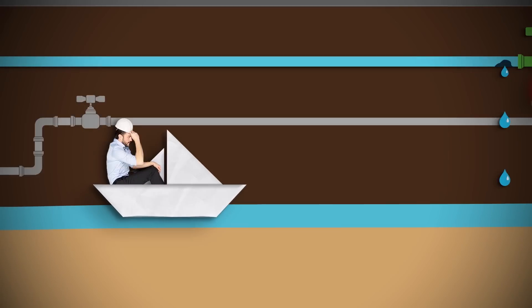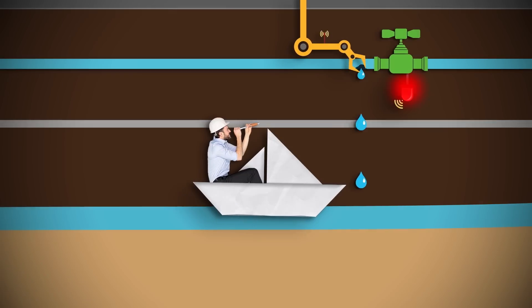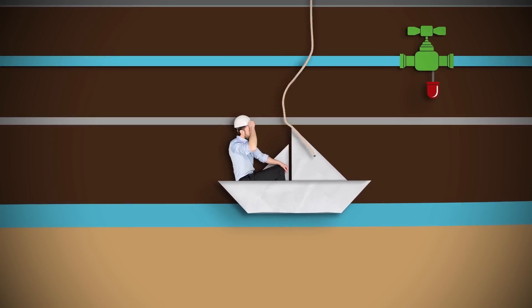Imagine you're an infrastructure provider and pipelines can automatically alert you when they're leaky and call maintenance robots to repair them.